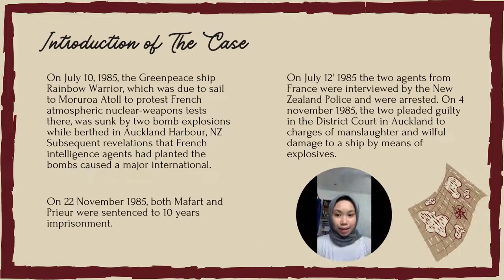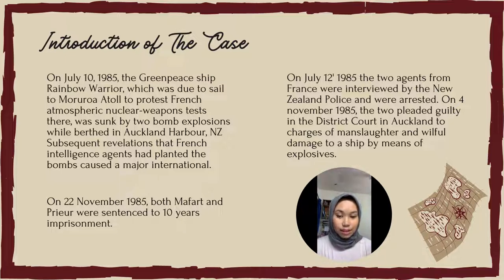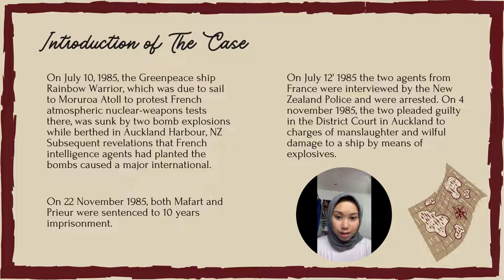The last case we will discuss is the Rainbow Warrior case. It was a dispute between New Zealand and France that arose in the aftermath of the sinking of the Rainbow Warrior, arbitrated by UN Secretary General Javier Perez de Cuéllar in 1986, and became significant in public international law for its implications on state responsibility. On July 10, 1985, the Greenpeace ship Rainbow Warrior, which was due to sail to Mururoa Atoll to protest French atmospheric nuclear weapons testing there, was sunk by two bomb explosions while berthed in Auckland Harbour.